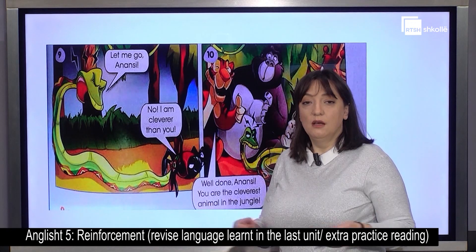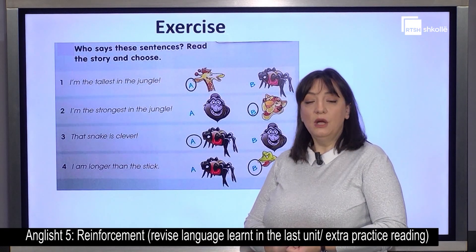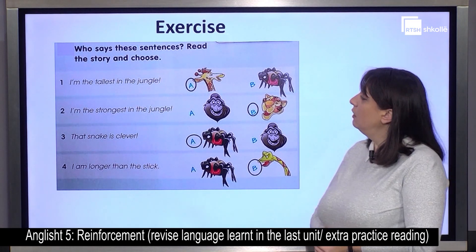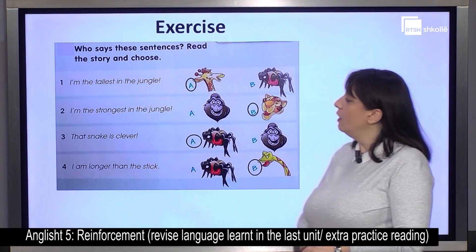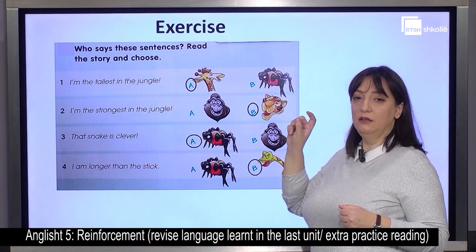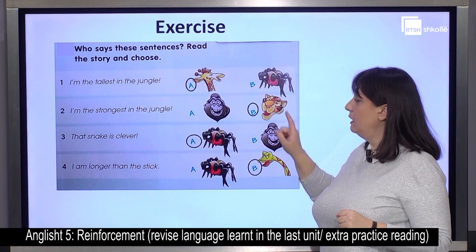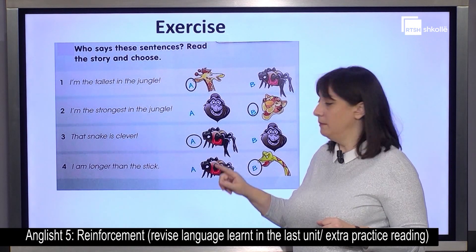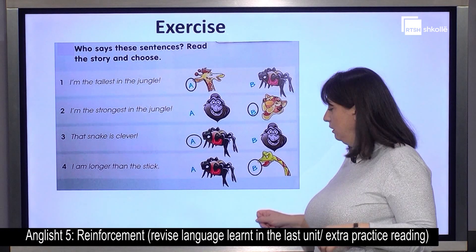What do we learn from this? Let's do a very short exercise on the reading — who says these sentences? Read the story and choose. 'I'm the tallest in the jungle' — who says that? The giraffe. 'I'm the strongest in the jungle' — do you remember the picture when the lion said that? It is the lion. 'That snake is clever' — Anansi says that, the spider. 'I am longer than the stick' — remember what the snake said? It is the snake.